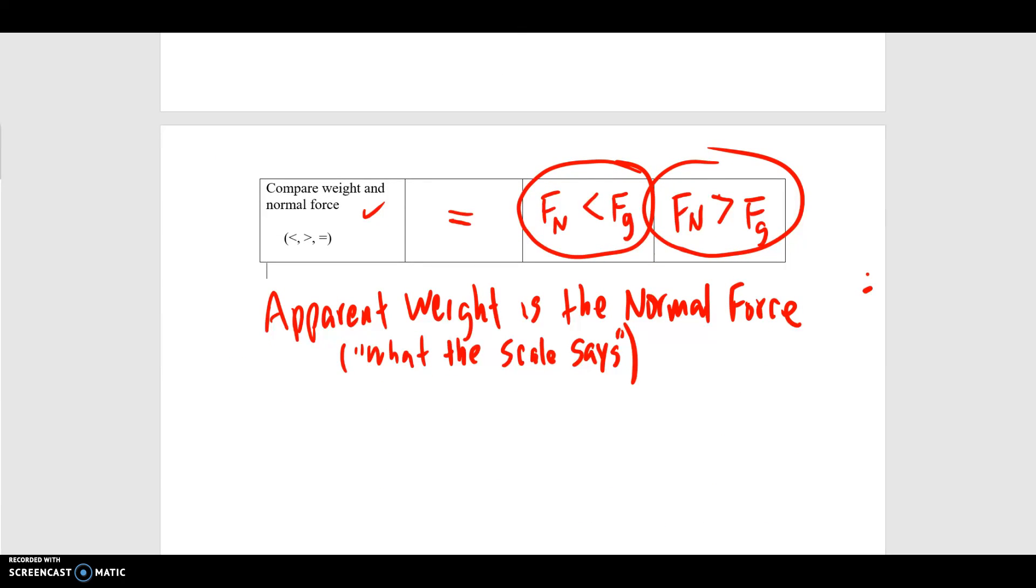Apparent weight is the normal force in a situation where there is vertical acceleration. In simple terms, it's whatever the scale says. If there was a scale the person is on and they're accelerating, then it's whatever the scale says.